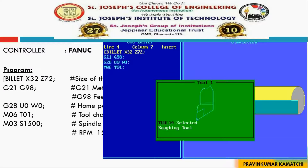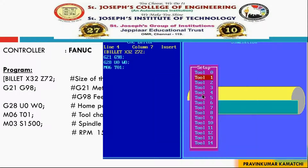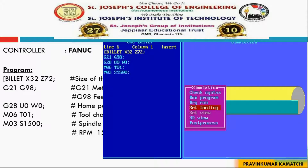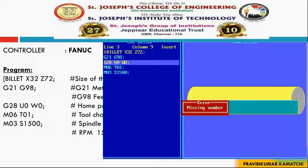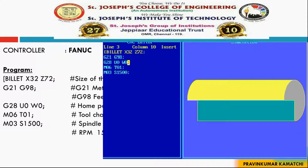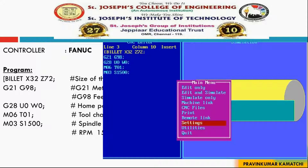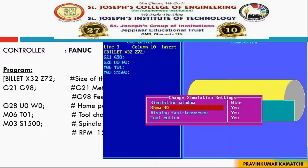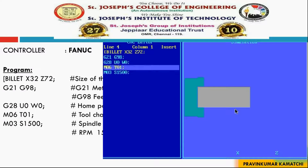Here you can see a roughing tool, which is enough to perform the turning as well as facing operation. Just run the program by clicking F9. You can also change the three-dimensional view into two-dimensional view so that you can see the tool movement more clearly. Click F10, go to Settings, and where it shows 3D just change it to No. Now you can see the 2D window.